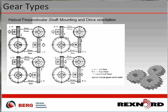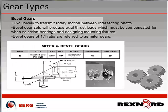Bevel gears are used exclusively to transmit rotary motion between intersecting shafts. A miter gear is shaped like a right circular cone with most of its tip cut off; when two bevel gears mesh, their imaginary vertices must occupy the same point. Miter and bevel gears come as sets and as singular items. Bevel gears of a one-to-one ratio are referred to as miter gears, and WM Berg offers ratios up to four-to-one.